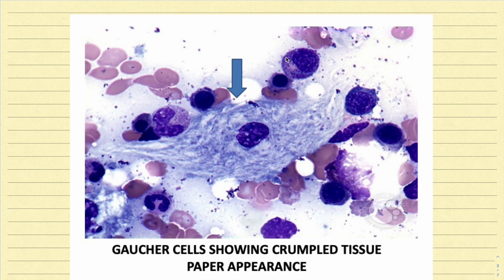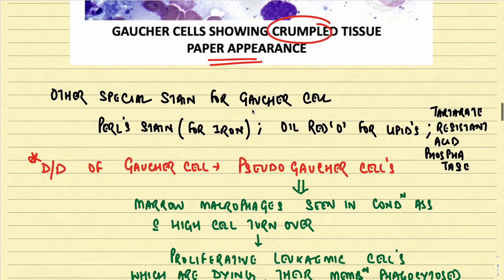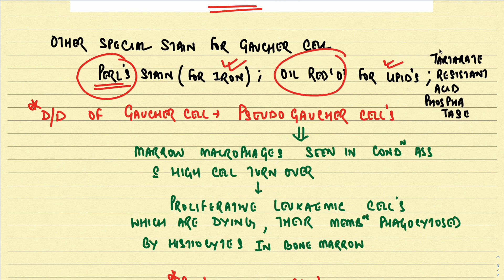The fibrillary cytoplasm occurs because the lysosomes contain stored lipid in a bilayered stack configuration — like crushed and re-opened paper, producing the crumpled tissue paper appearance. Other important special stains for Gaucher cells include the Pearl stain to highlight iron, Oil Red O to highlight lipids, and tartrate-resistant acid phosphatase (TRAP) staining.